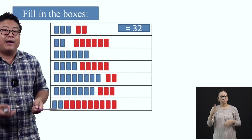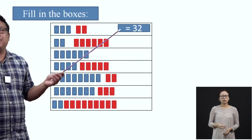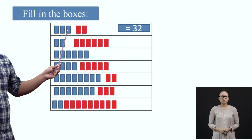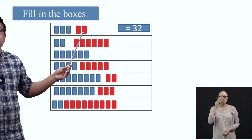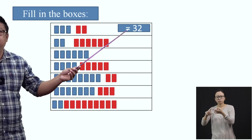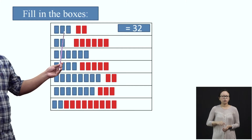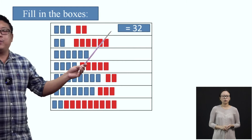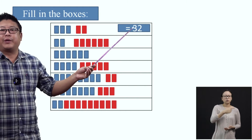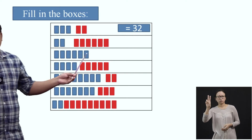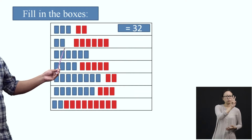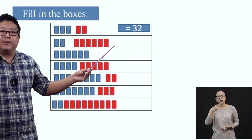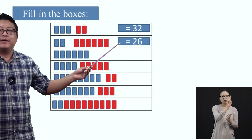Now let us try to solve some exercises. Let's solve this together — fill in the boxes. The blue strips represent tens and the red strips represent ones. In the first example, we can see that there are three blue strips, so we write three in the tens place. We see two red strips, so we write two in the ones place. Together, we call it as thirty-two. Here, we can see two blue strips — so this is two. And in the red strips, we can see six of them. So we will call this number as twenty-six.